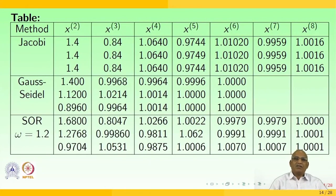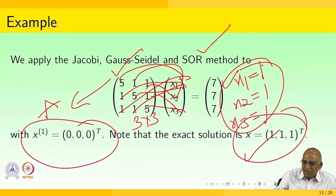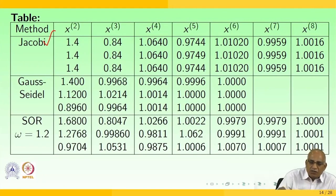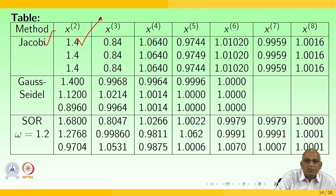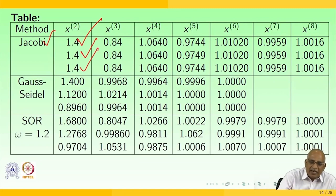Applying the Jacobi method starting with [0, 0, 0]: in the first iteration, x1 = x2 = x3 = 7/5 = 1.4. In the second iteration, all three values become 0.84. Note that all three values are used simultaneously at each iteration.